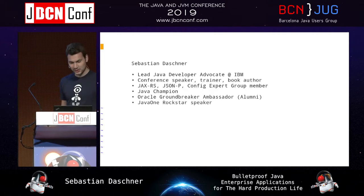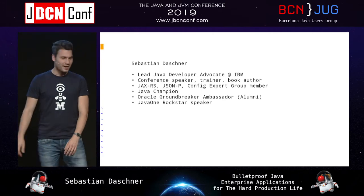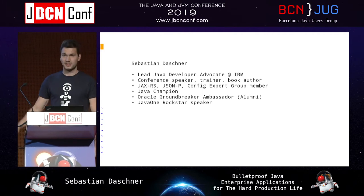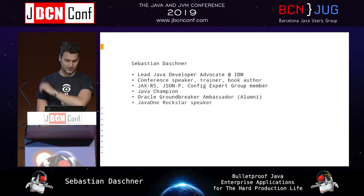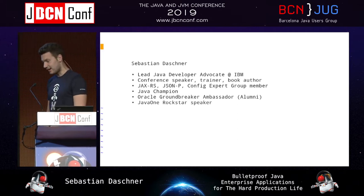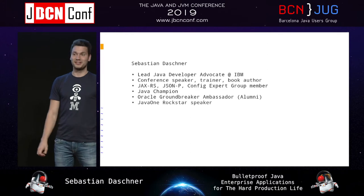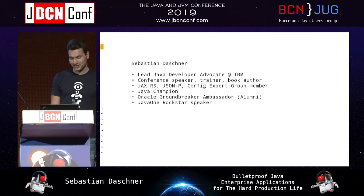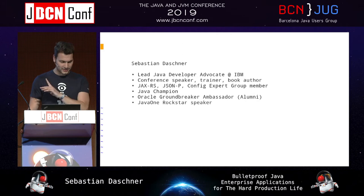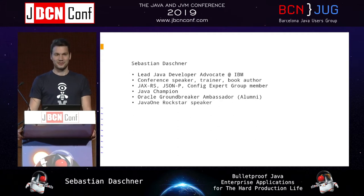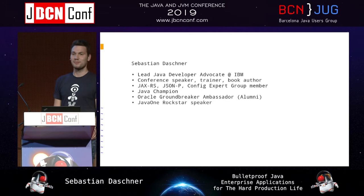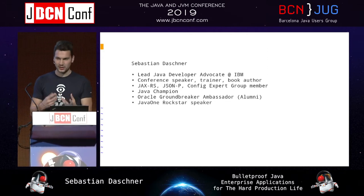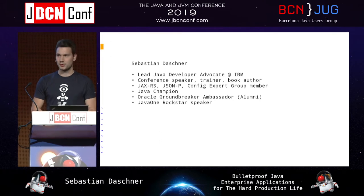My name is Sebastian Daschner, born and raised in Munich, Germany. I work for IBM doing a lot of Java enterprise work. I'm happy to be back in Barcelona — one of my favorite cities in Europe. I have a coffee shop example with two applications I'm going to show you, where we'll implement resiliency approaches running either in Docker containers locally or later in a cloud setting.